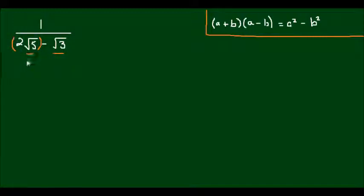So in this case I'm going to treat 2√5 as my a term, and I'm going to treat √3 as my b term.